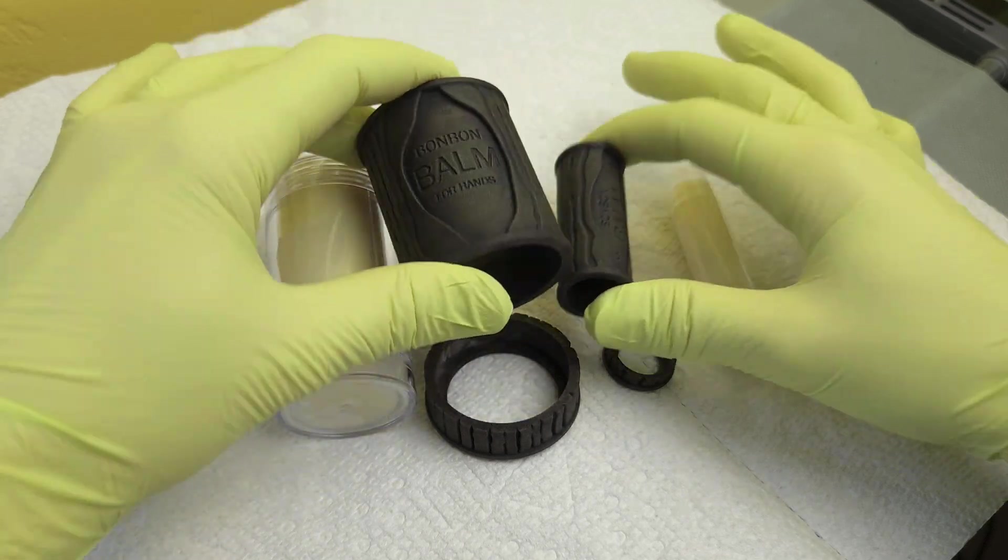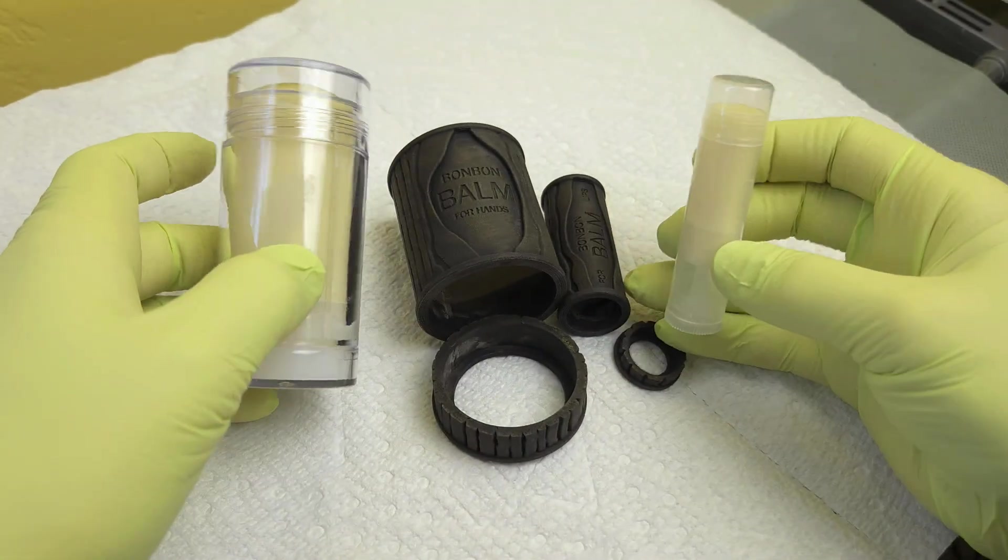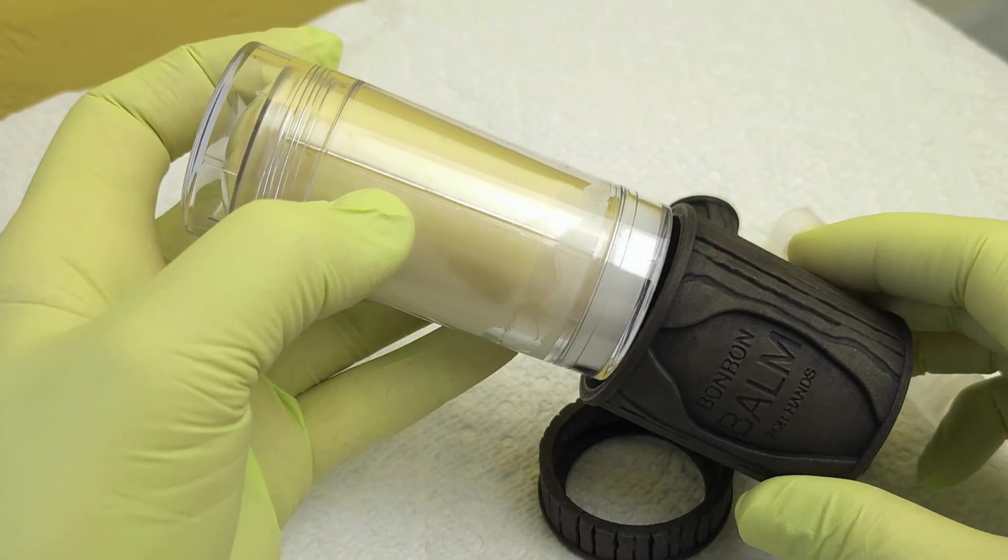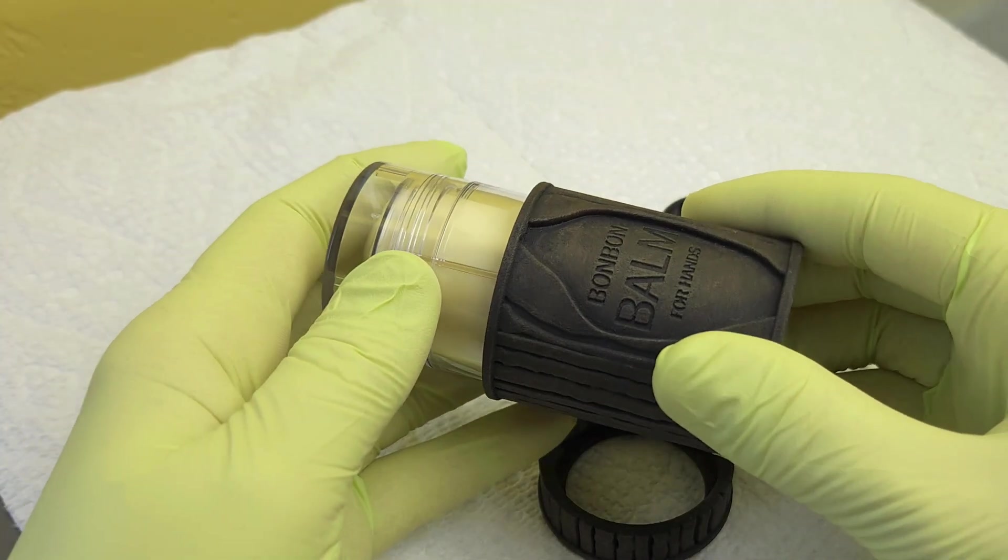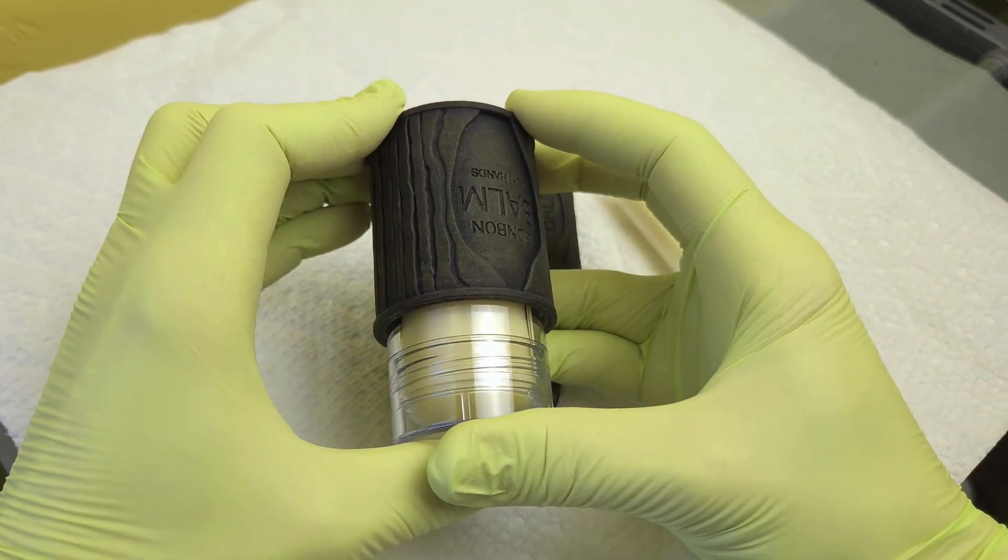All painted. Time to put them onto the containers that I've already filled with the balm for the lip and the hand balm. So this slides onto here. And it's very tight, so I will need to use a rubber mallet probably to get it all the way on.